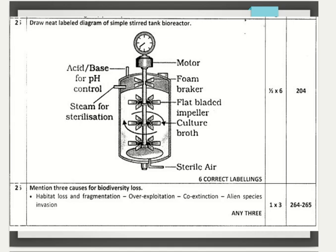Draw a neat labelled diagram of a simple stirred tank bioreactor, worth three marks. There are no marks for the diagram itself; six correct labellings earn three marks at half a mark each. The labellings to mention include: motor, foam breaker, flat bladed impeller, culture broth, steam for sterilization, and acid or base for pH control.